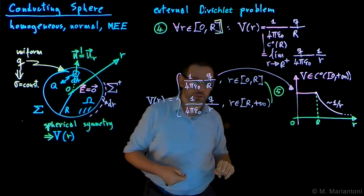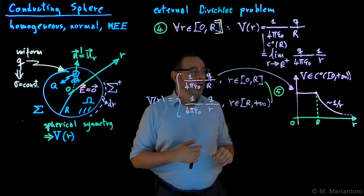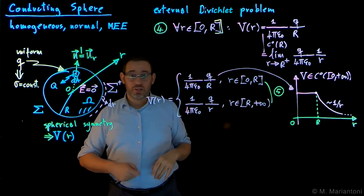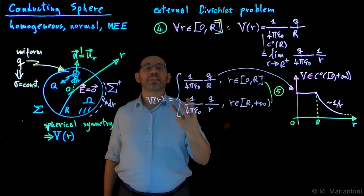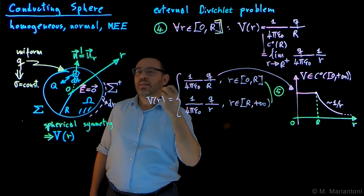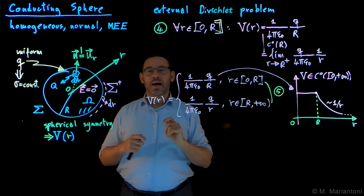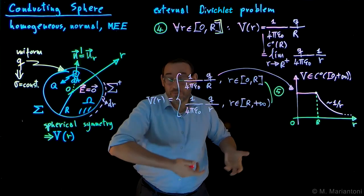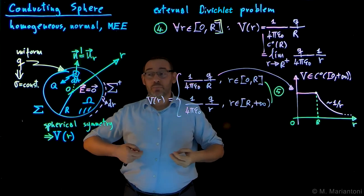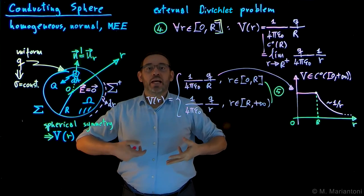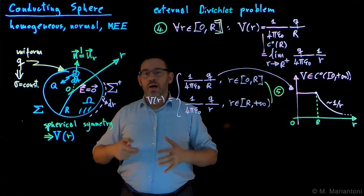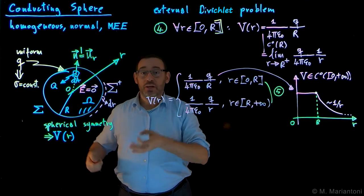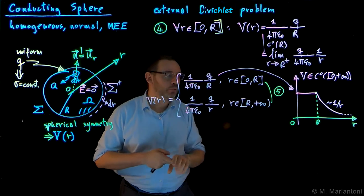The electrostatic field is discontinuous: it is zero inside, and goes as 1/r squared outside. In the beginning I mentioned the hard sphere — it is a hard sphere — but effectively it behaves as if it were a shell of charge. So a conducting sphere, even though it is full of matter, actually behaves like a shell of charge.